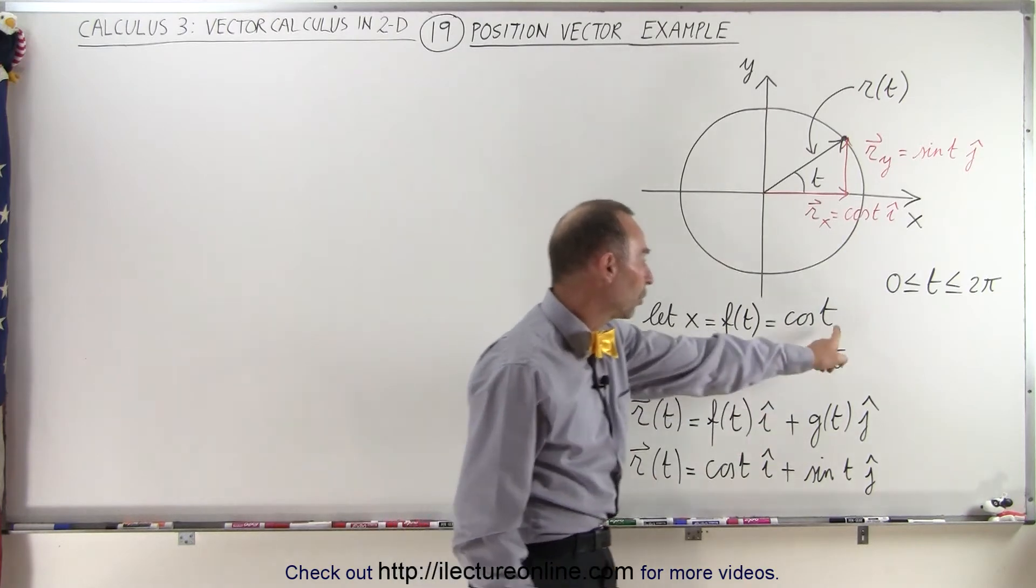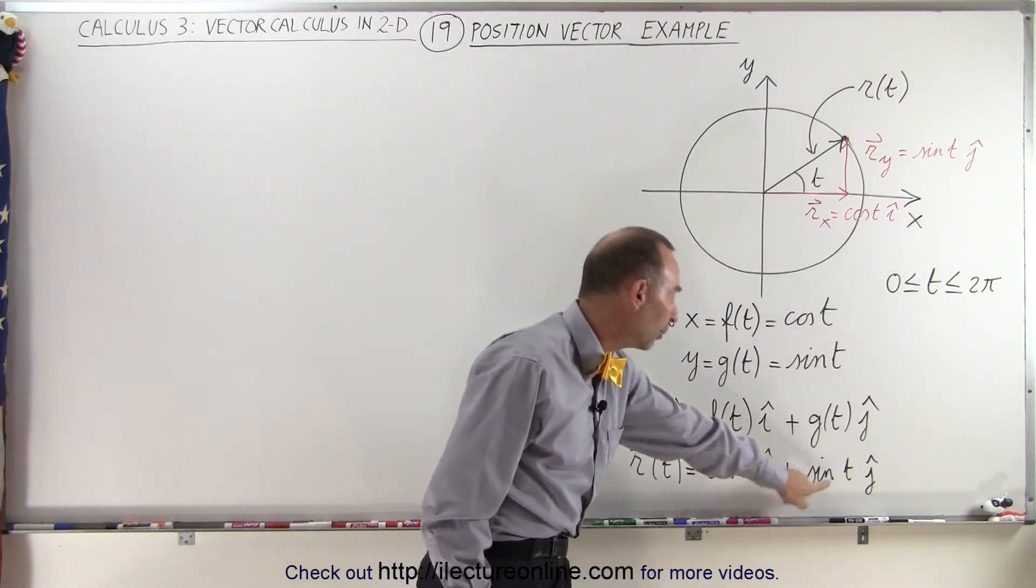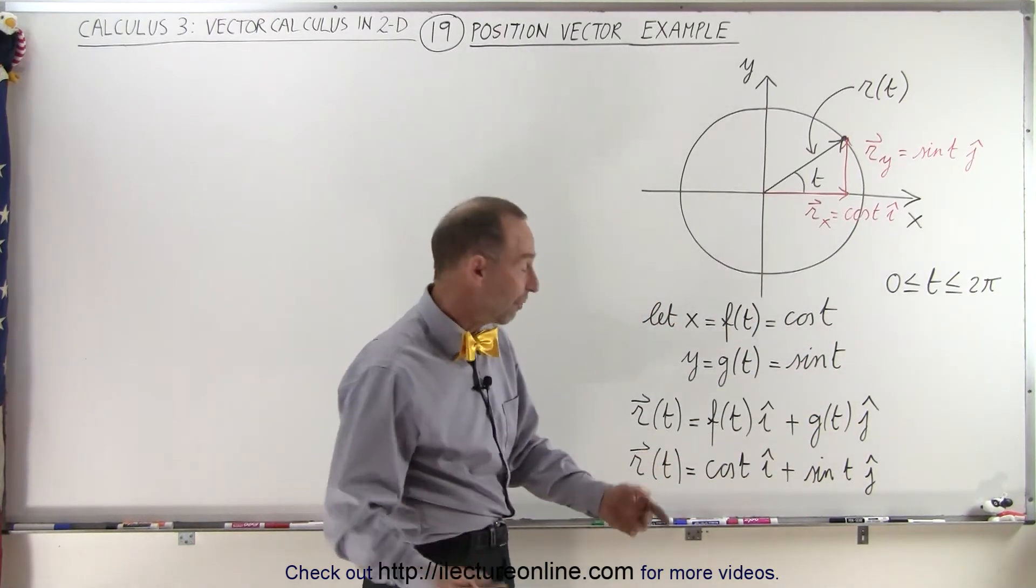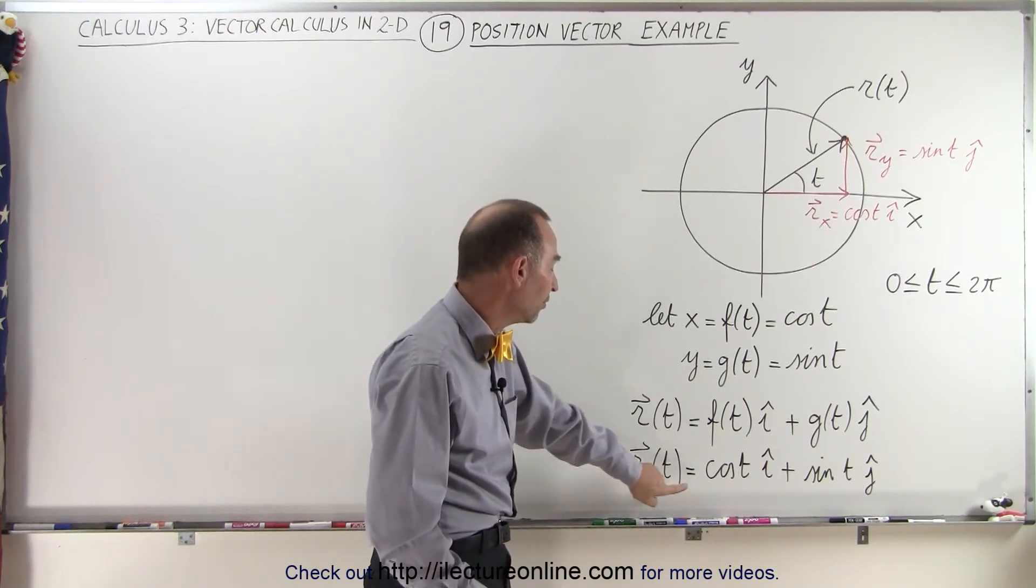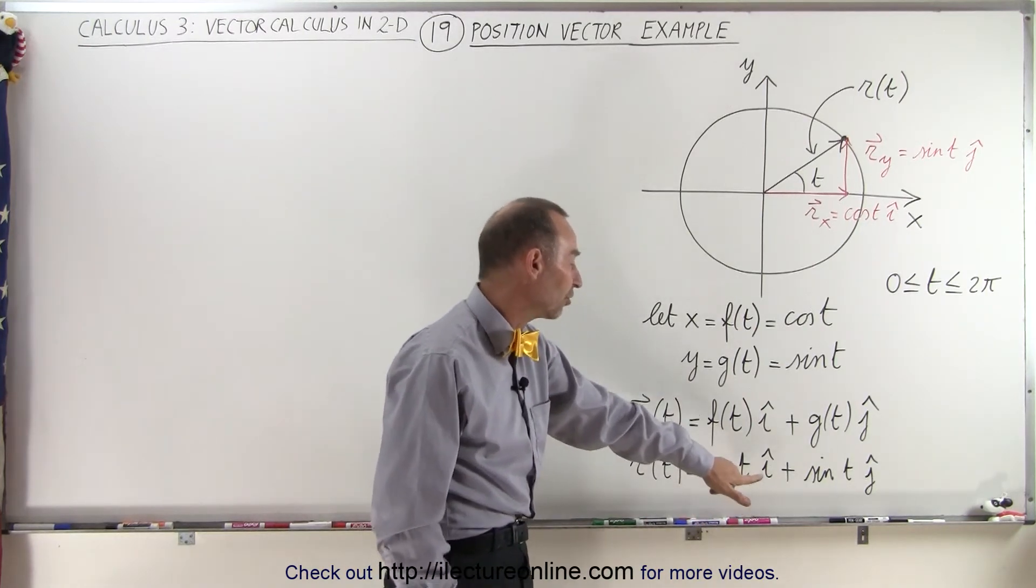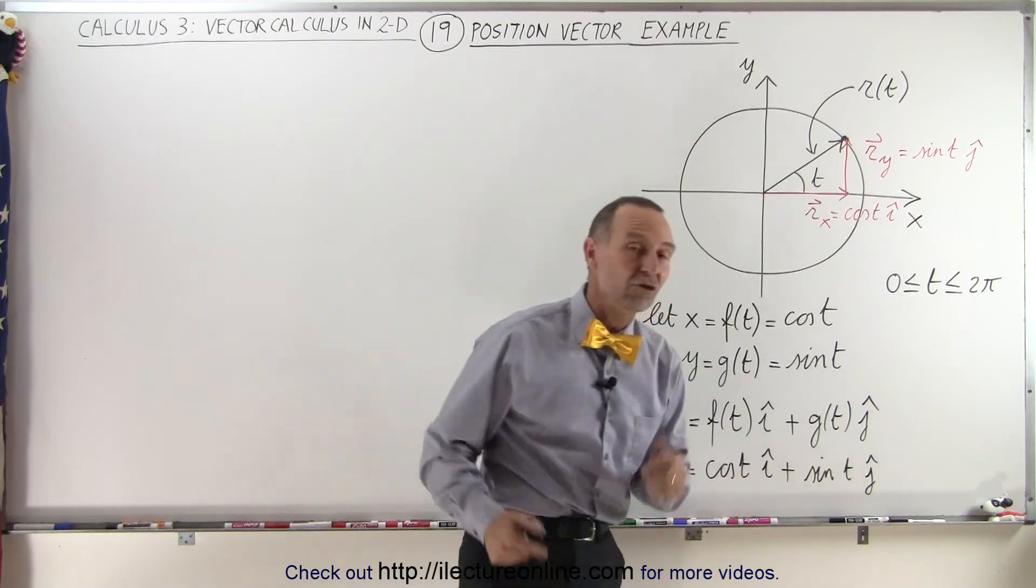And since the x component is the cosine of t, and the y component is the sine of t, the position vector could be written as r as a function of t is equal to the cosine of t in the i direction, plus the sine of t in the j direction.